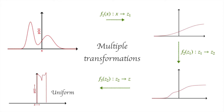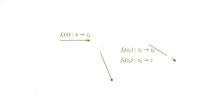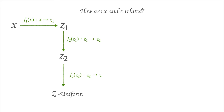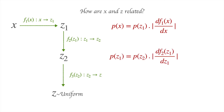But now, instead of having just one transformation from X to Z, we can have multiple transformations. For example, X gets transformed into Z1 by function F1, which then gets transformed into Z2 by function F2, which then gets transformed into Z by function F3. So we can ask the same question again: what is the relationship between the probability density of X and the probability density of Z?